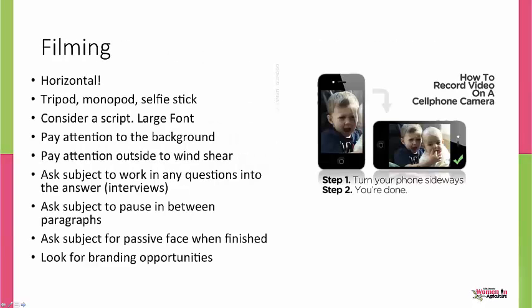The number one thing to get out of this session today: please film horizontal. Look at the shape of your computer or your TV set at home. If you've looked at YouTube, if you go to a movie theater, you don't see portrait screens — you see horizontal screens. Everybody wants to shoot portrait; it's more native and feels like a better grip. But it wreaks havoc when you're trying to edit. News broadcasts cringe when they see vertical footage because they have to do all the special editing and you get black squares on the sides.